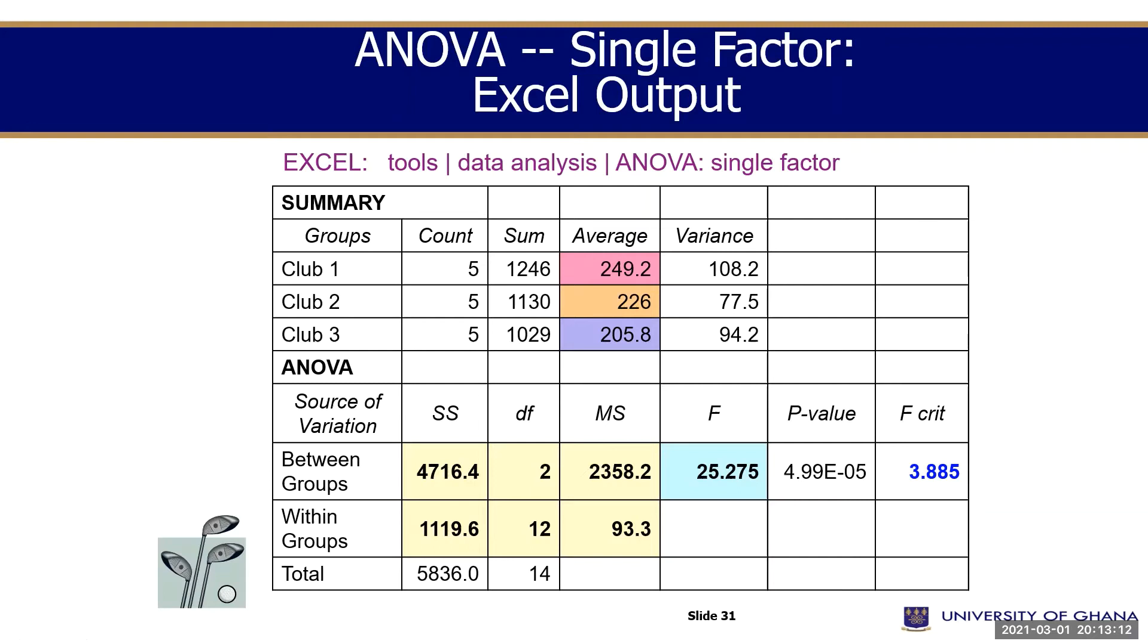Mean square for each one of them. Degrees of freedom is this. So when you see MSW, MSW value here, this guy here is this divided by this will give you this.